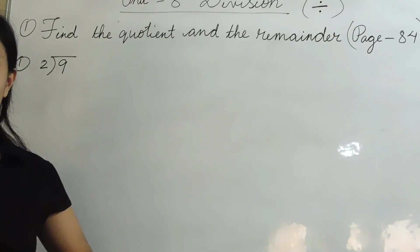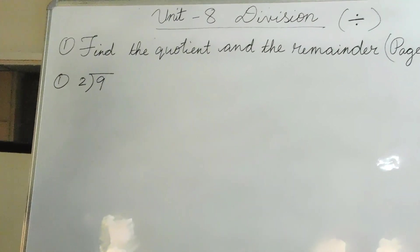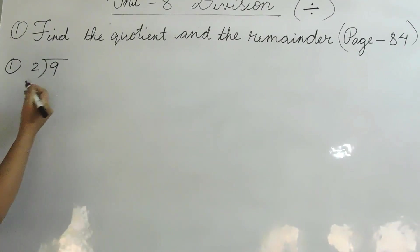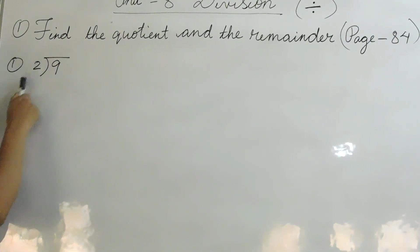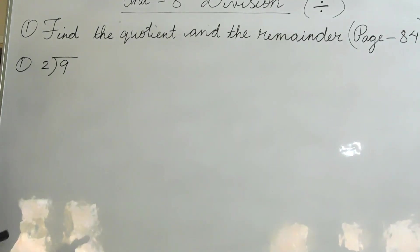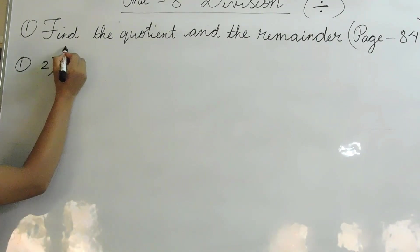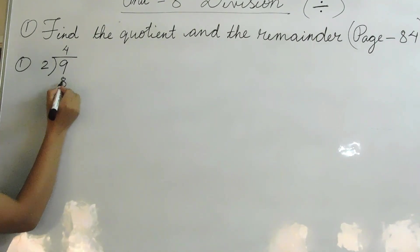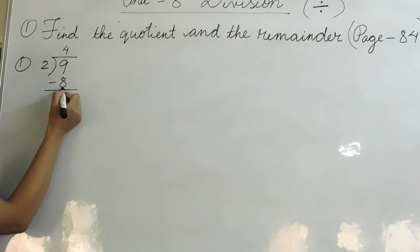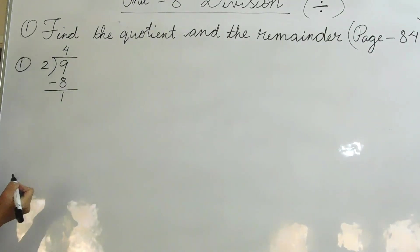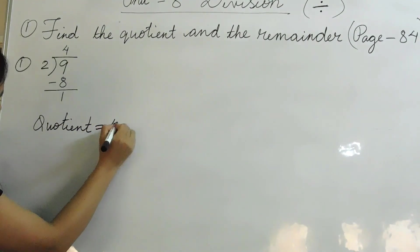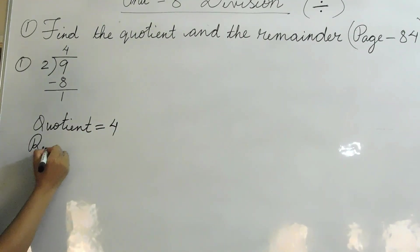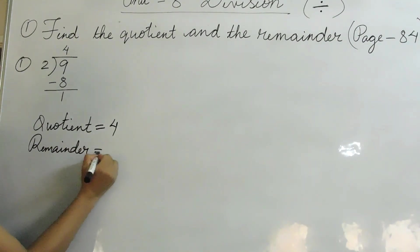Now let's learn division with remainders, on page number 84, question number 1: Find the quotient and the remainder. 9 divided by 2. Here, 9 is not a multiple of 2 — in other words, 9 is not exactly divisible by 2. The nearest number that is divisible by 2 is 8. So 2 four times is equal to 8. 9 minus 8 is equal to 1. So 4 is the quotient and 1 is the remainder.